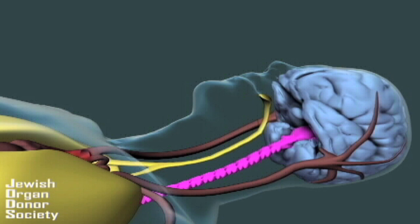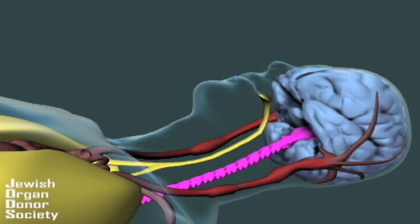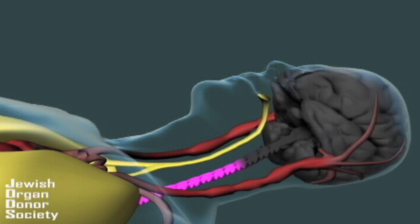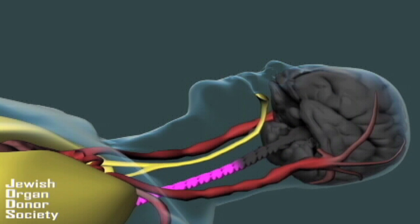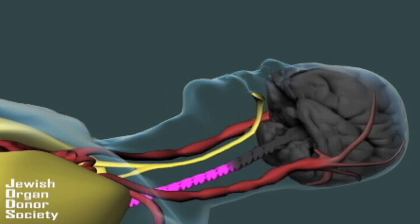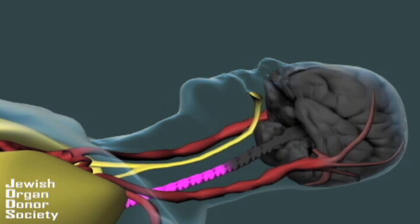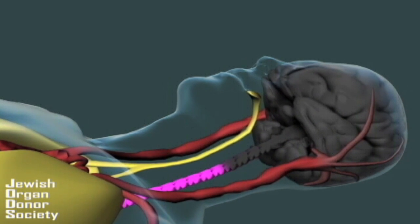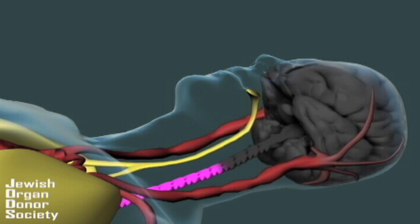Once this happens, the heart can no longer force oxygenated blood into the brain. With no supply to the brain, the brain cells die due to the lack of oxygen. In fact, the cells don't just die — a process called lysis begins where cells begin to liquefy.